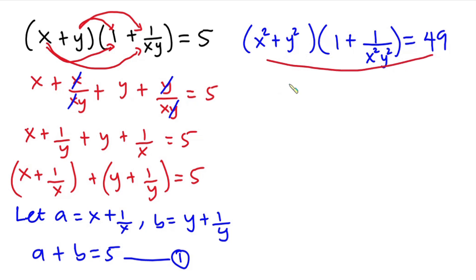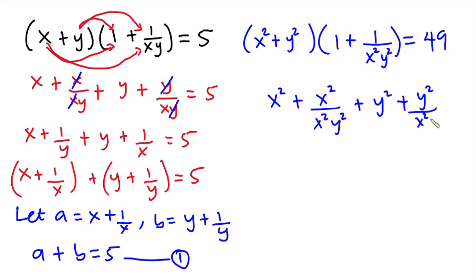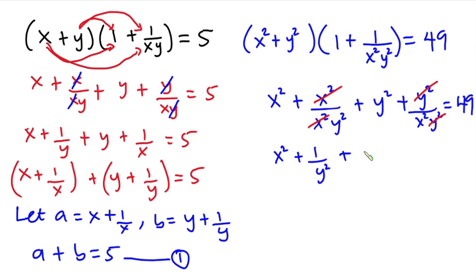Now let's focus on the second equation. I'll also multiply this one out. So we have x squared plus x squared over x squared times y squared, then plus y squared plus y squared over x squared times y squared, is equal to 49. From here, this x squared will cancel this x squared, then this y squared will also cancel this y squared. So we have x squared plus 1 over x squared, then plus y squared plus 1 over y squared, and this is equal to 49.